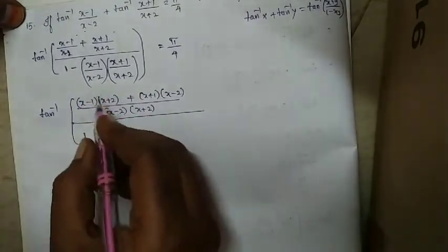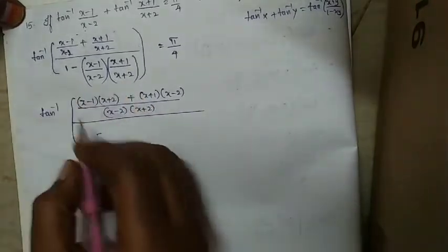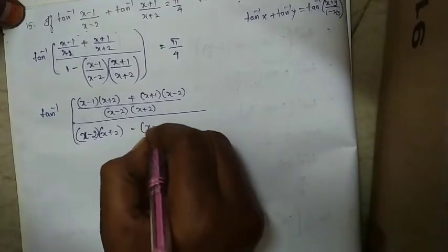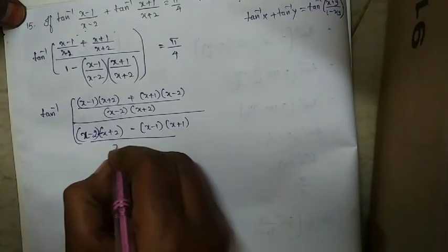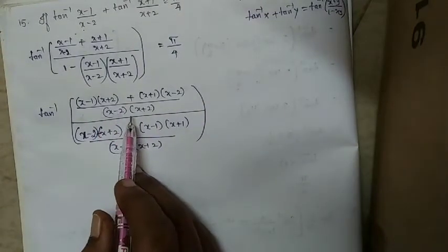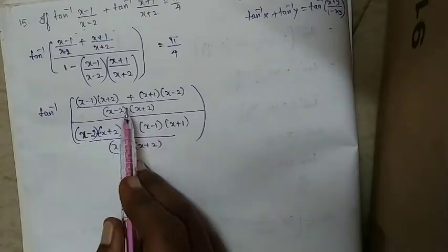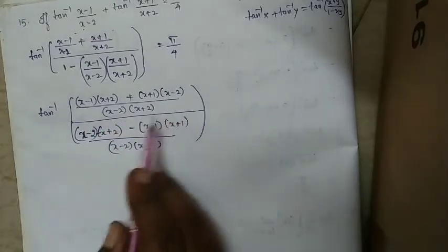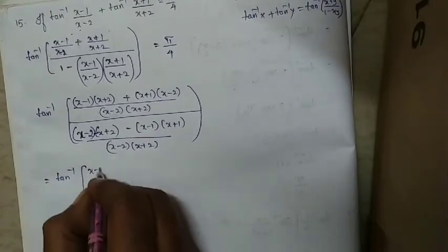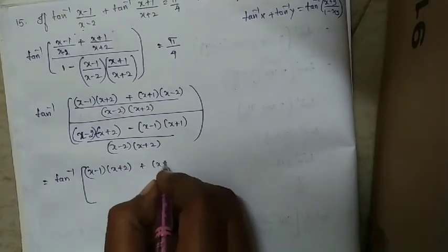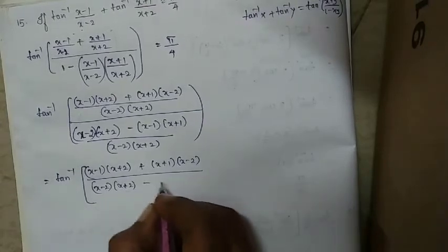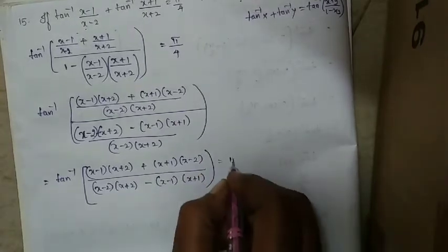Expanding the numerator: (x−1)(x+2) + (x+1)(x−2) = x²+2x−x−2 + x²−2x+x−2 = 2x²−4. Expanding the denominator: (x−2)(x+2) − (x−1)(x+1) = x²−4 − (x²−1) = −3. So tan inverse((2x²−4)/(−3)) = π/4.